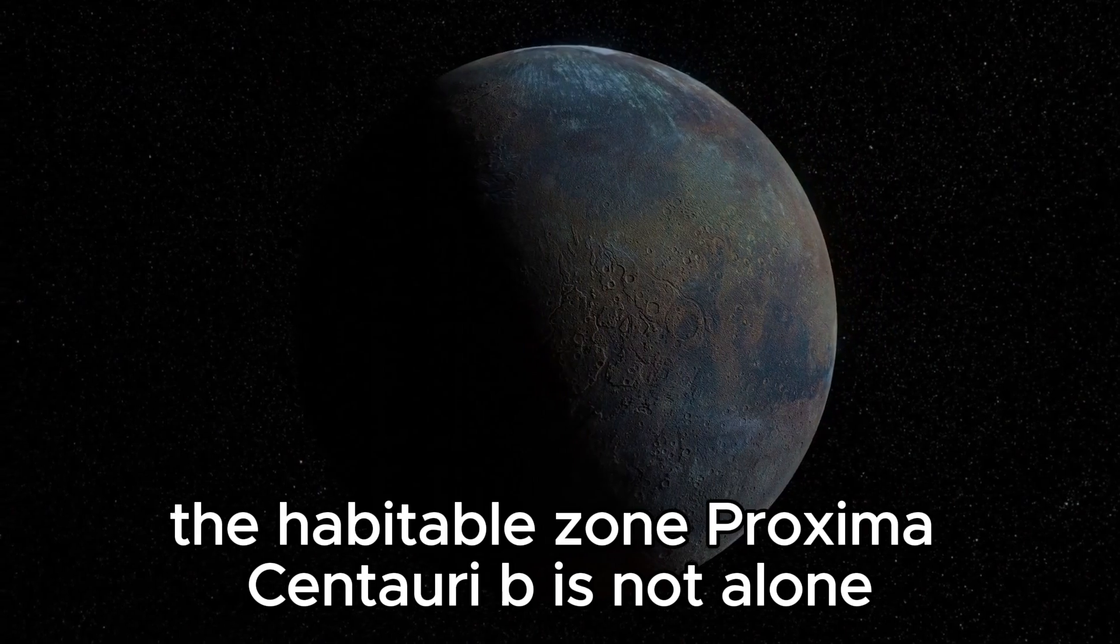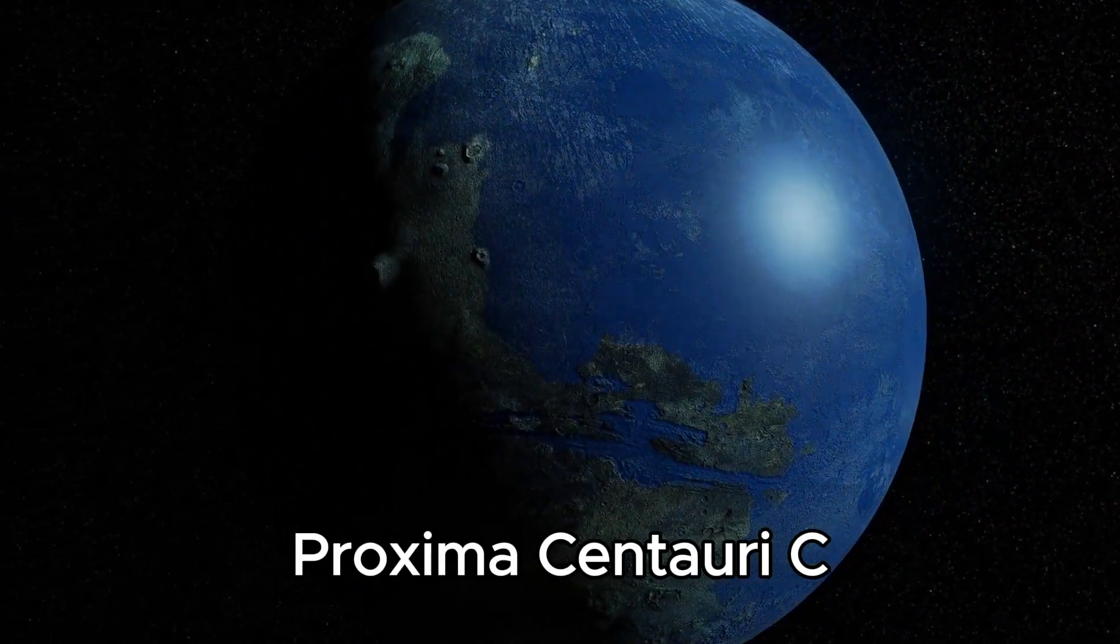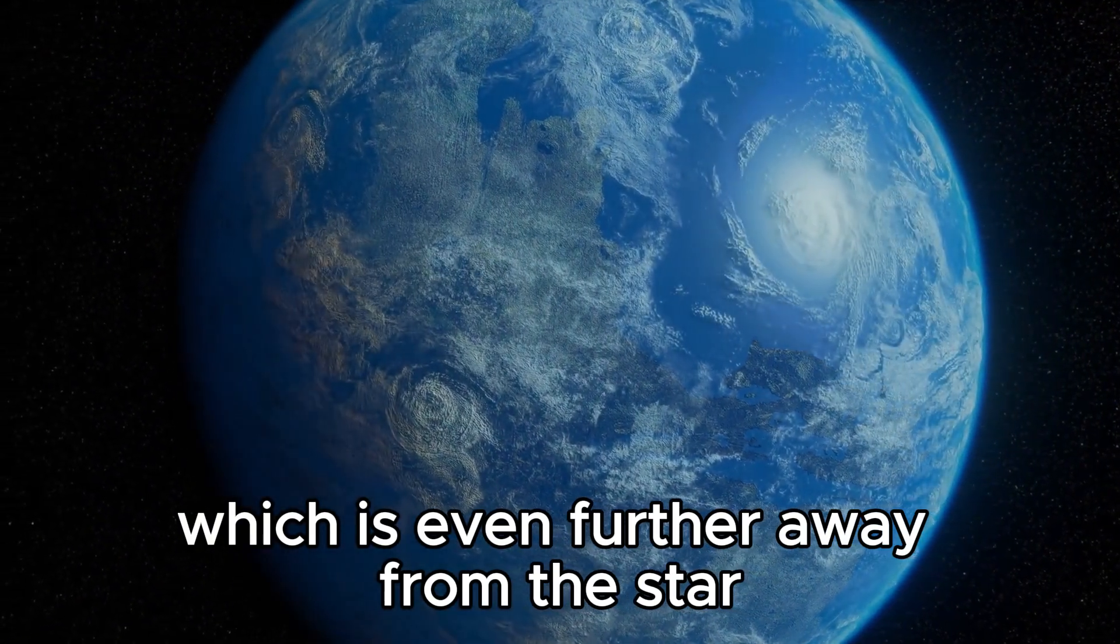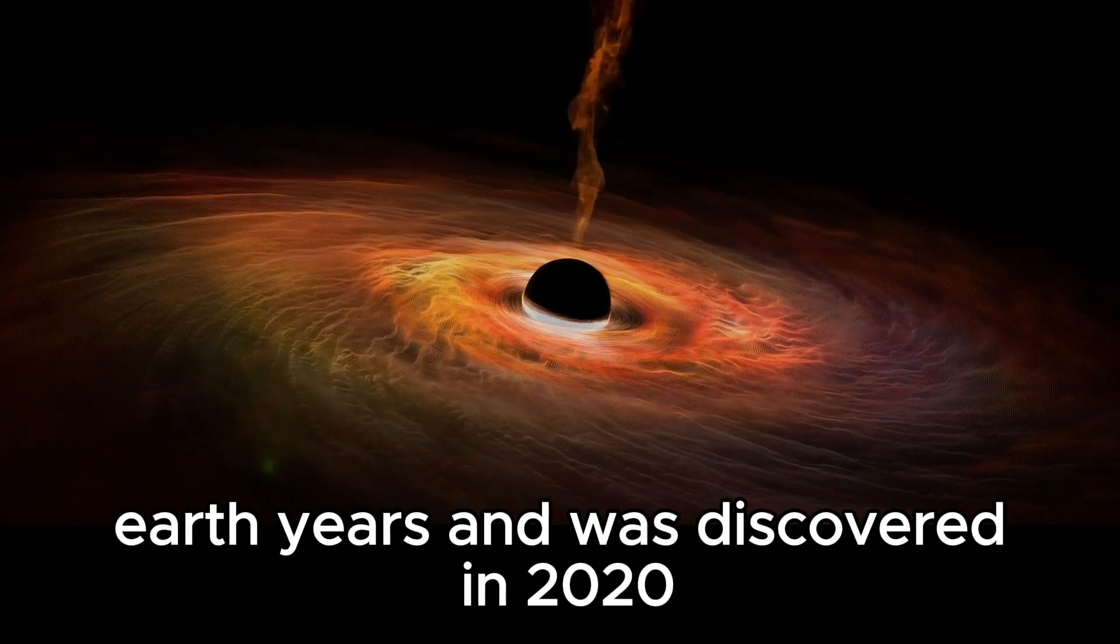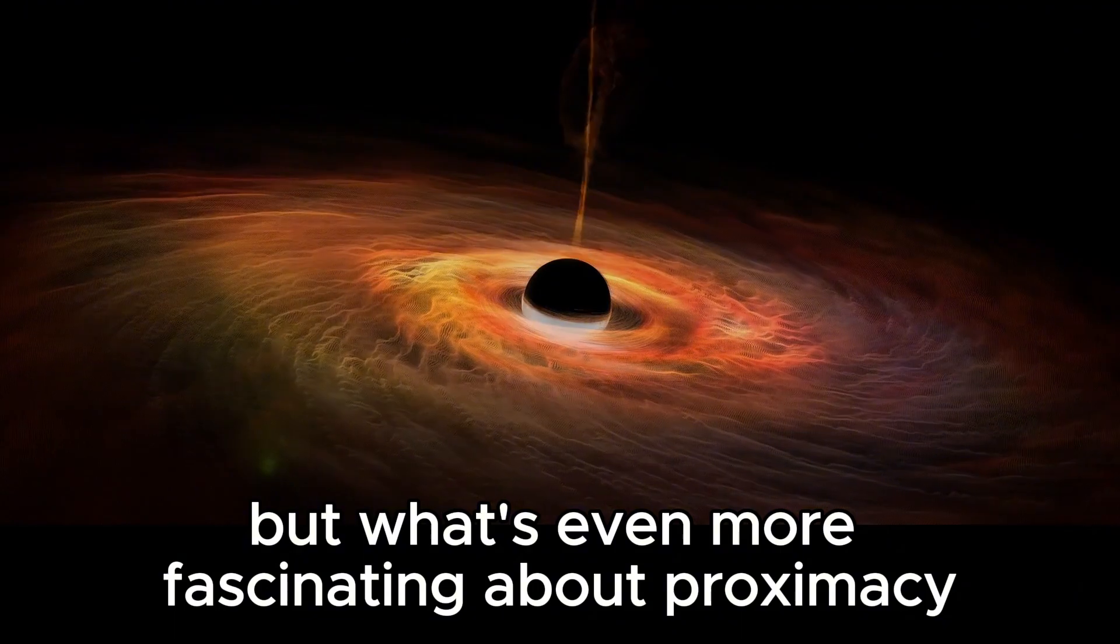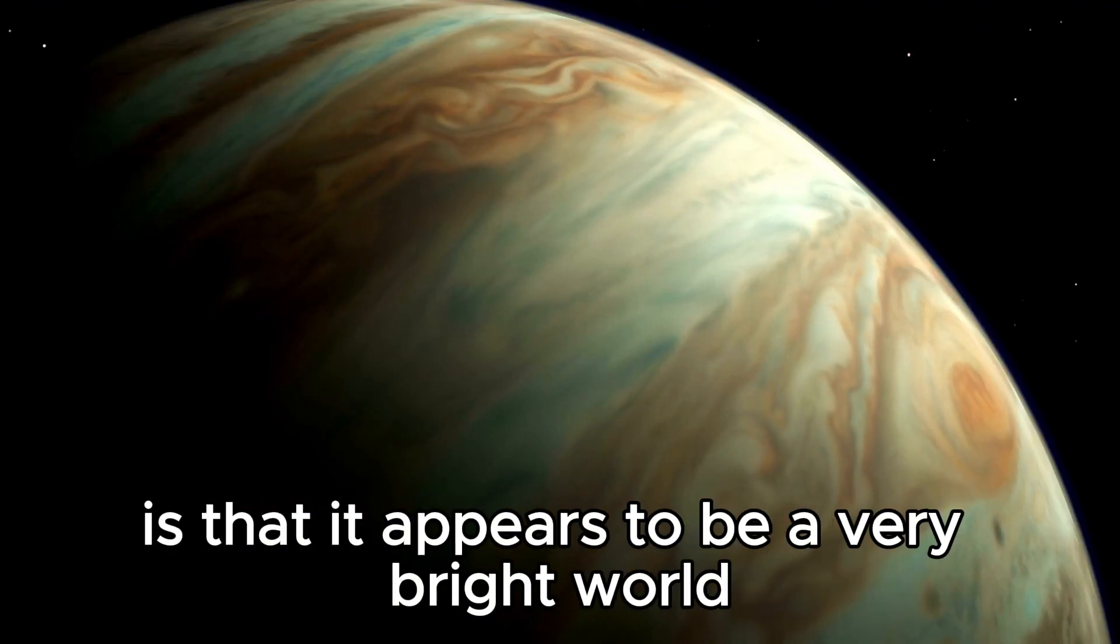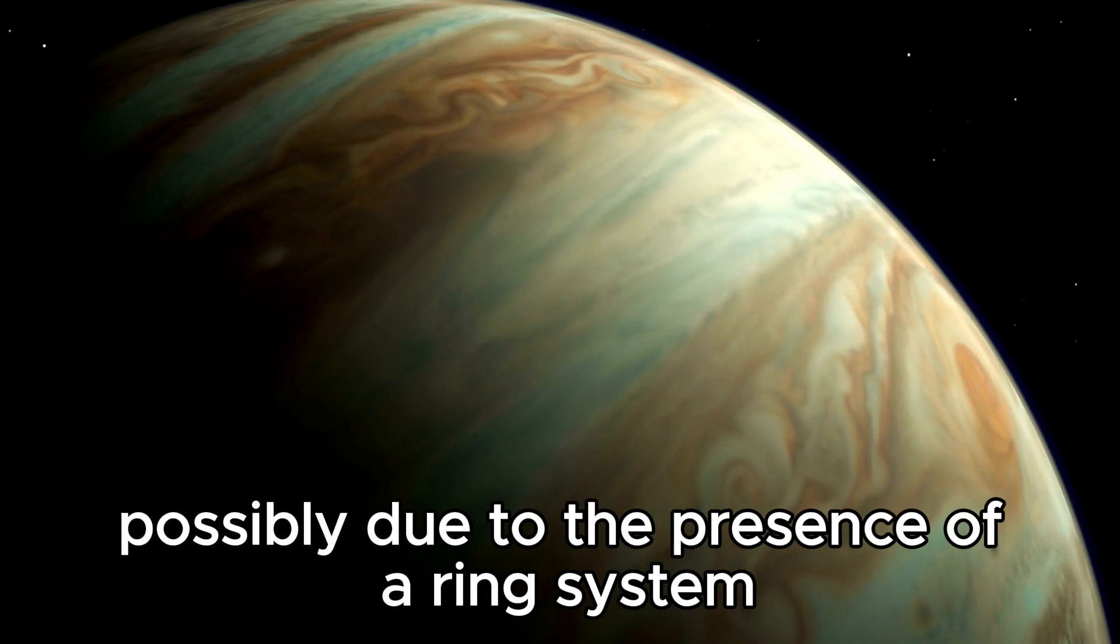Proxima Centauri b is not alone. It has a partner in crime, Proxima Centauri c, which is even further away from the star. This planet has an orbital period of approximately five Earth years and was discovered in 2020 using pre-recovery Hubble data. But what's even more fascinating about Proxima c is that it appears to be a very bright world, possibly due to the presence of a ring system.